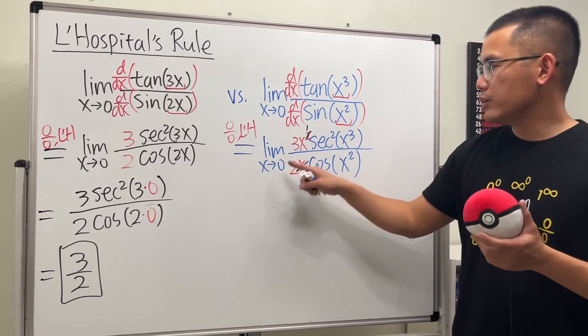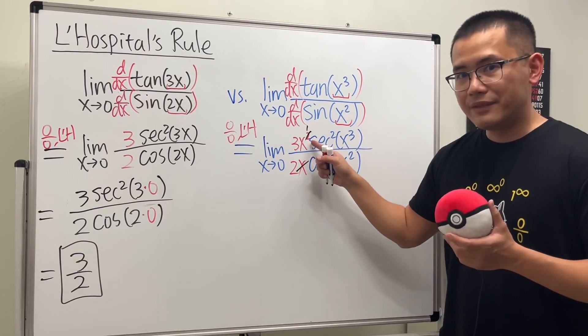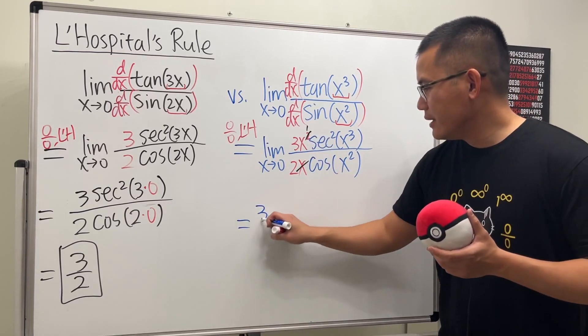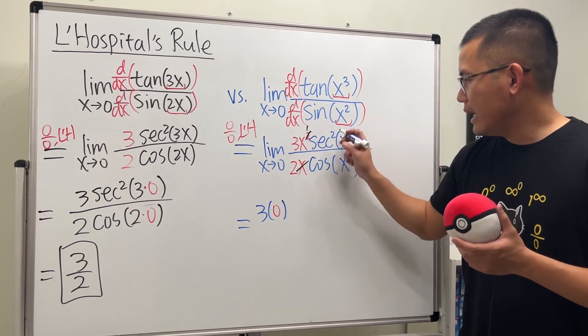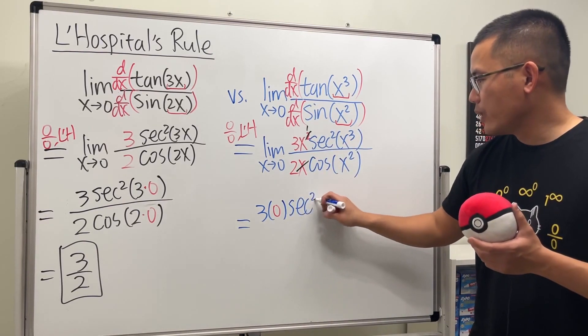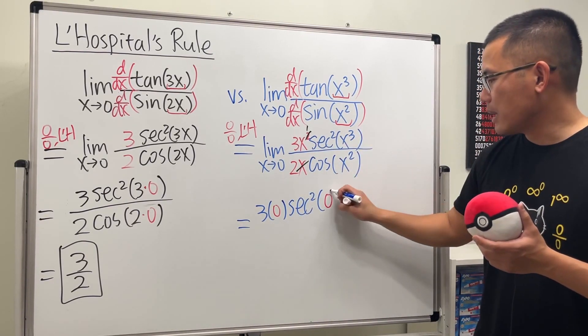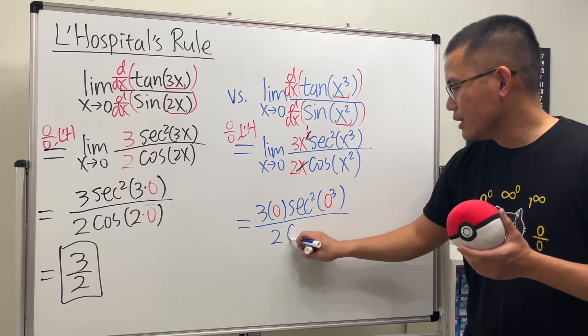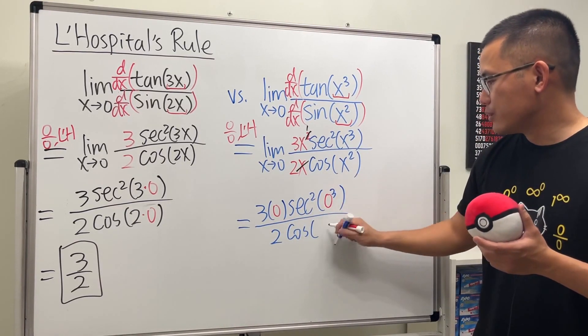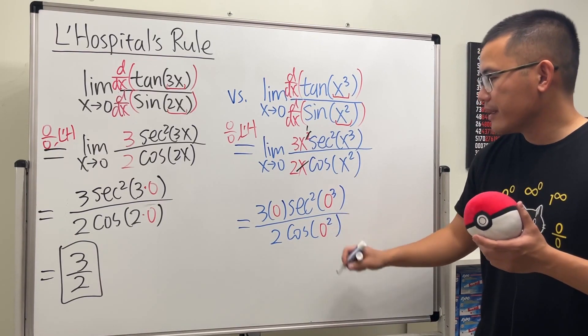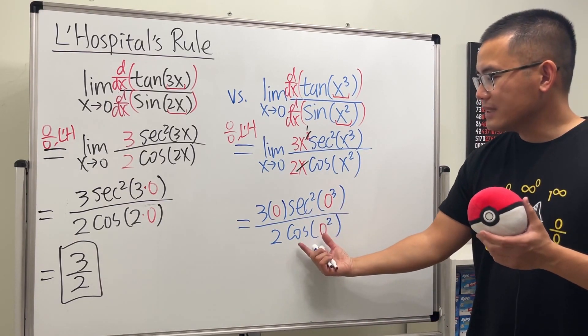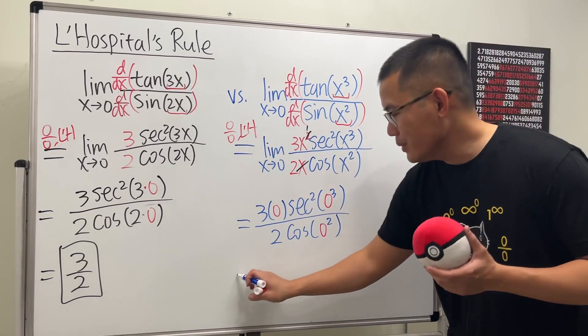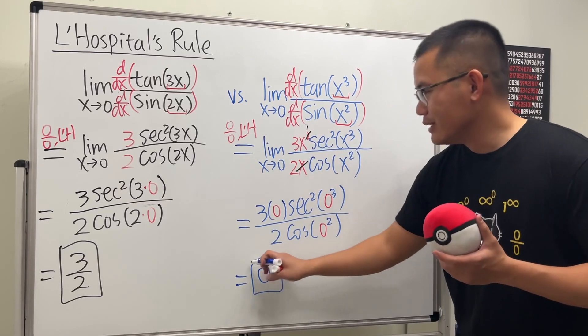This time we put zero into all the x's, but we have this additional x. So we get three times—the x is zero—and then we have secant squared of zero to the third power, over two times cosine of zero squared. This is one, that's one, but three times zero is zero. Zero over two is equal to zero.